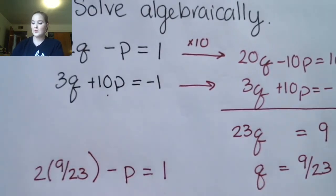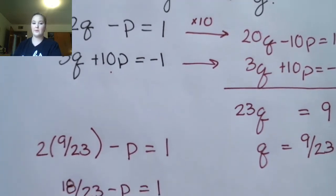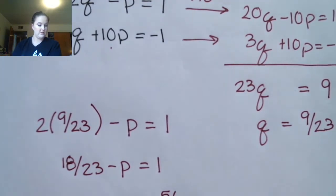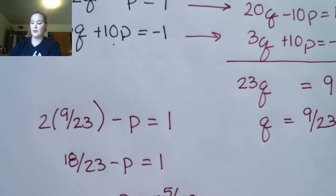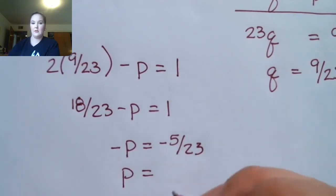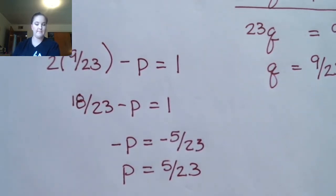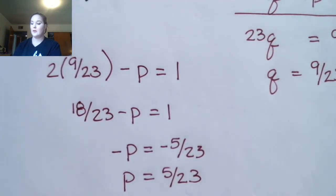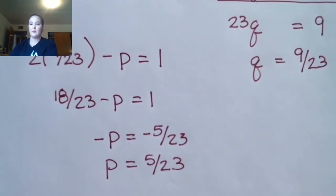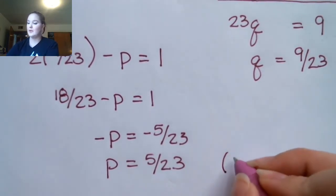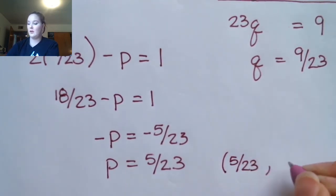2 times 9 over 23 is 18 over 23. I'll subtract 18 over 23 from both sides, then multiply both sides by negative 1. Now I have my two answers for p and q. Just as I said previously, you put them in alphabetical order — p then q — so the answer is 5 over 23 comma 9 over 23.